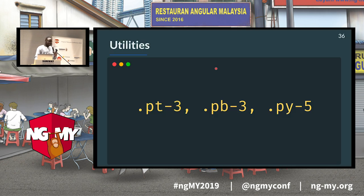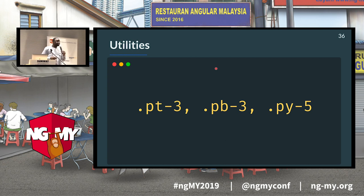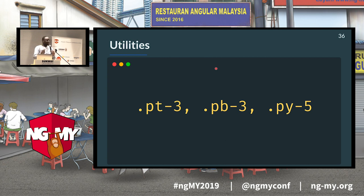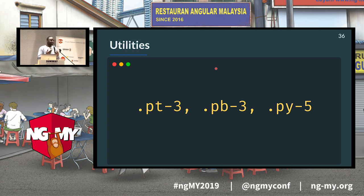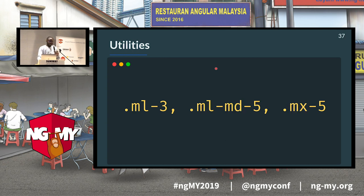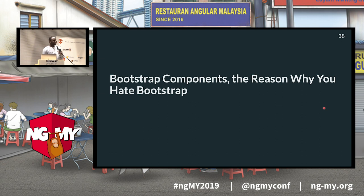The utilities are easy to understand. For example, 'pt-3' means padding top 3. What does 'pb-3' mean? Padding bottom. And 'py' means vertical padding — the combination of padding top and padding bottom. We also have margin utilities like 'ml-3' for margin left 3, 'ml-md-3' for margin left on medium devices, and 'mx' for horizontal margin.